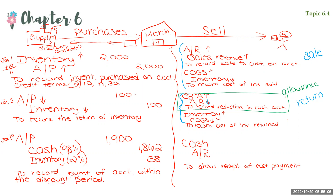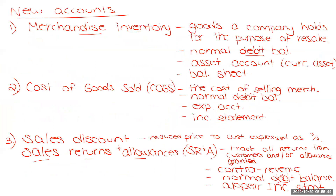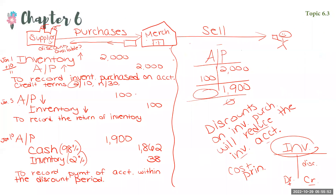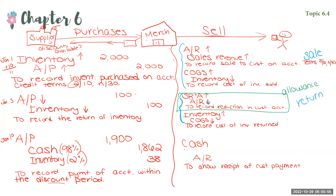Remember how there were discounts available when we were purchasing? We might also offer a discount to our customers — we want to keep them happy. Let's say there are discount terms of 5/10, net 40. We know how to read that: 5% discount if the customer pays within 10 days. If that happens, this journal entry changes slightly — we add one extra account: Sales Discount, which has a normal debit balance.